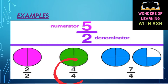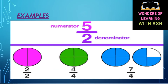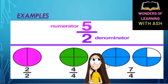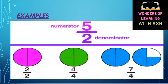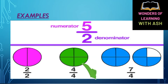Now, one whole is divided. Because we have divided it and made a whole shape, so this will be a fraction, but it will be an improper fraction.